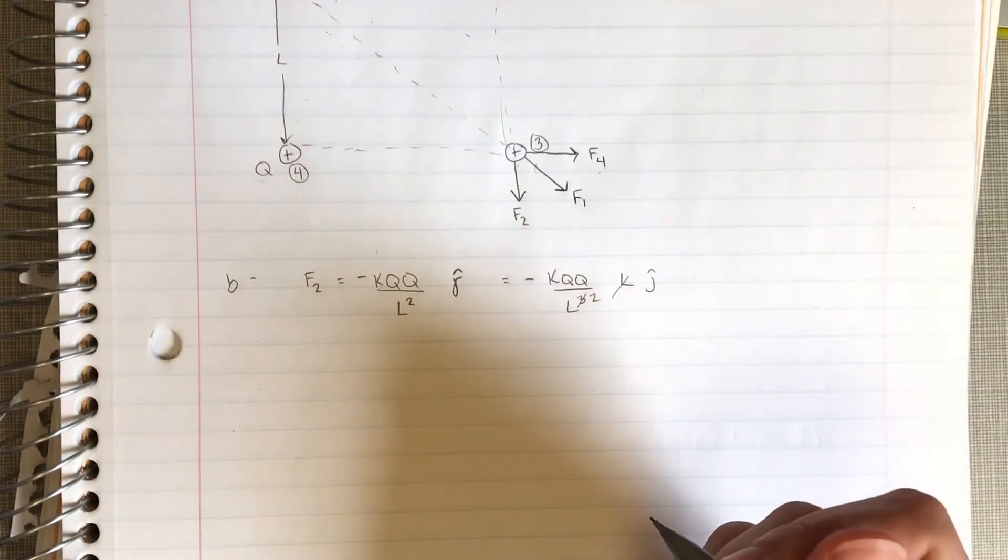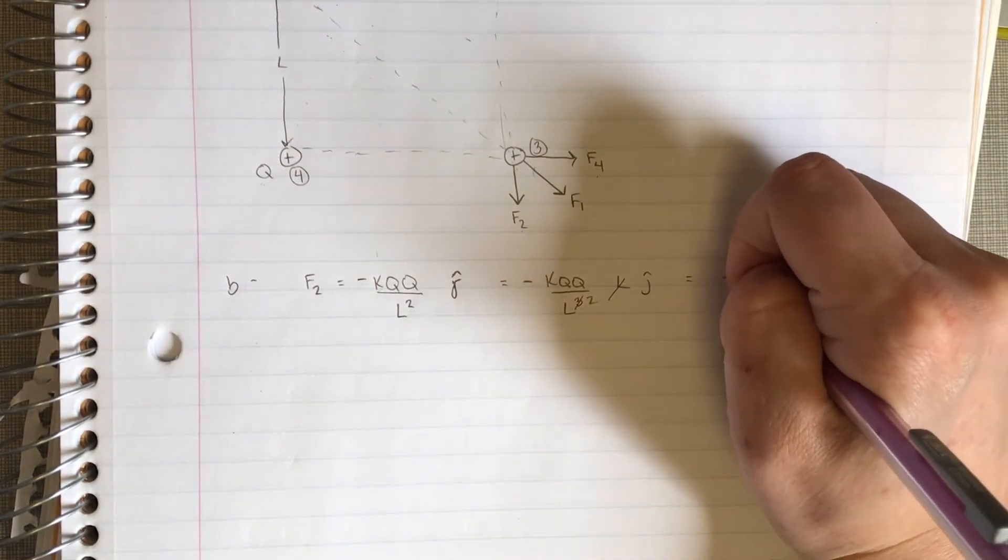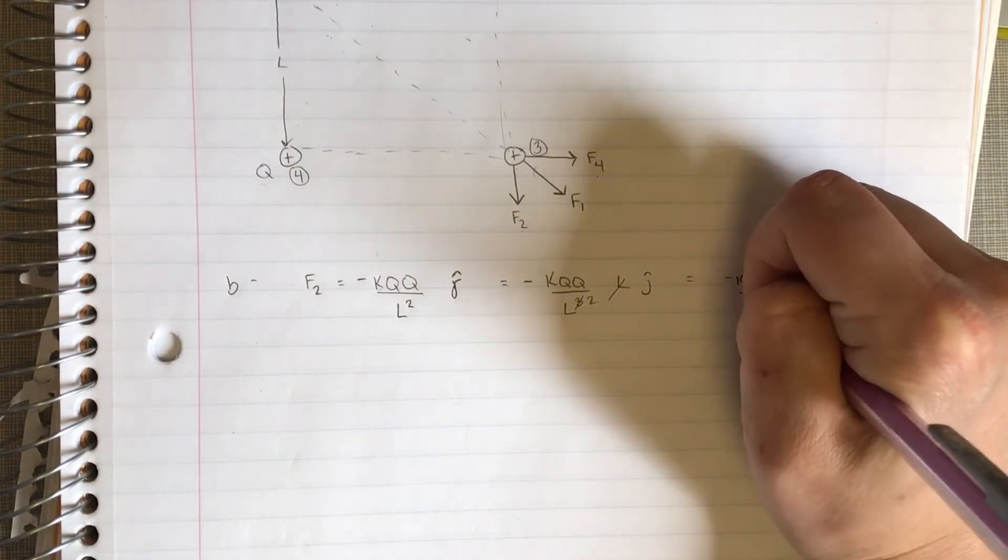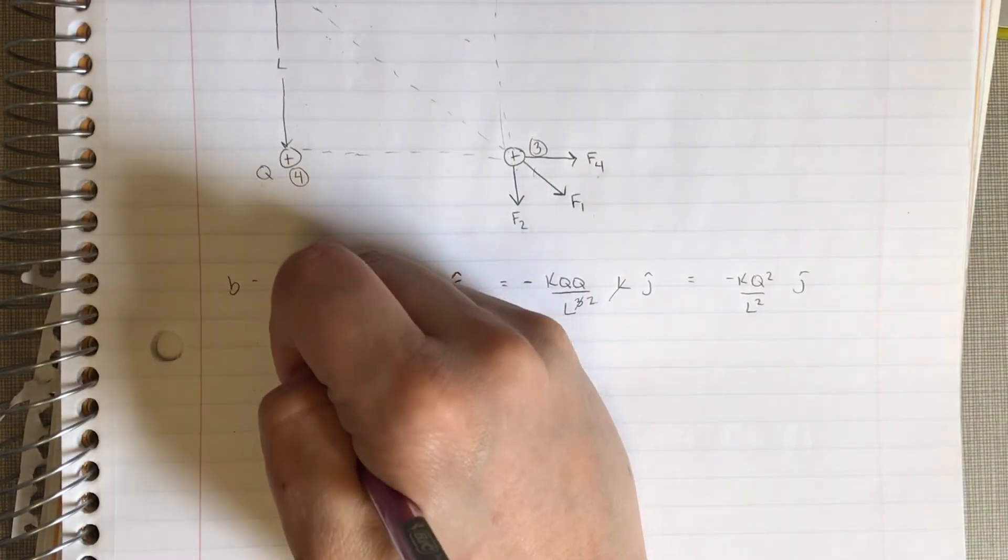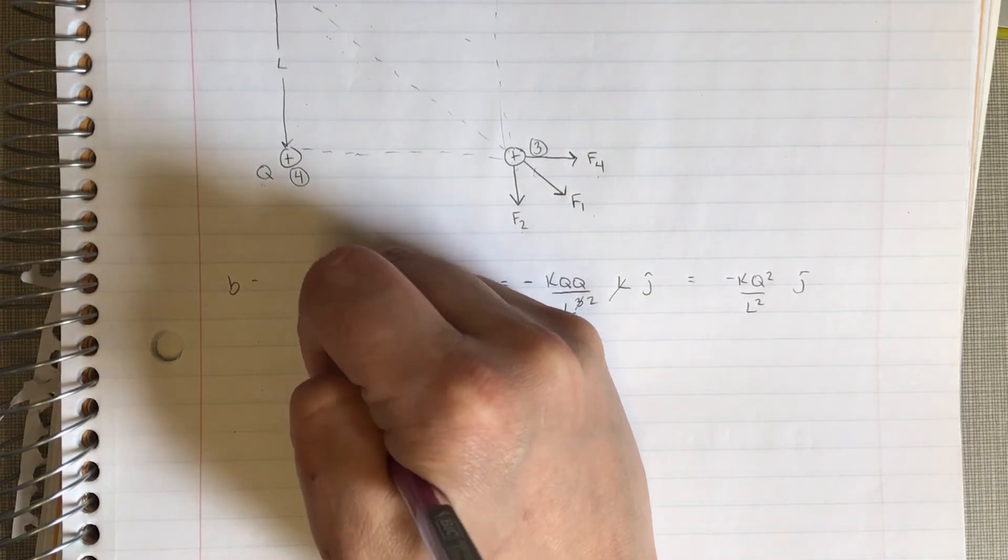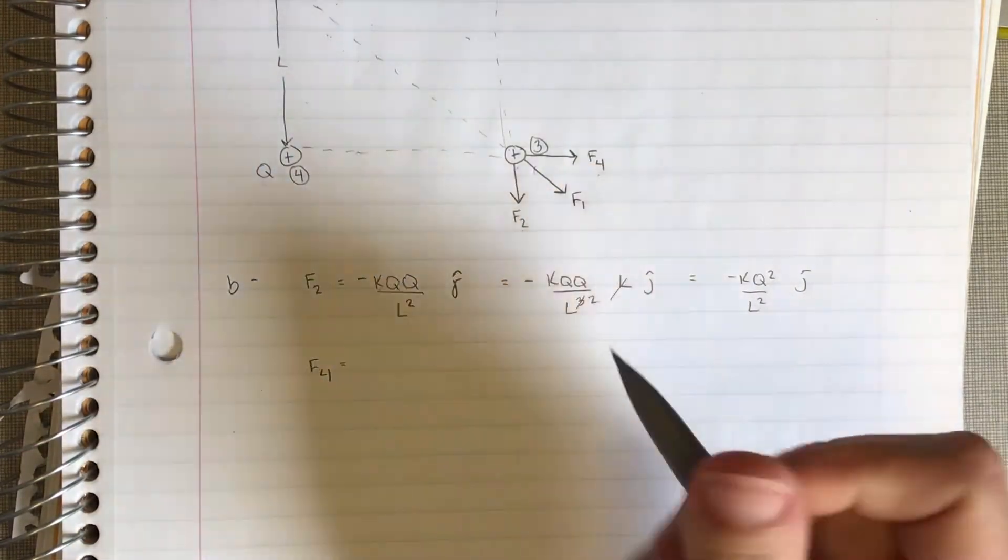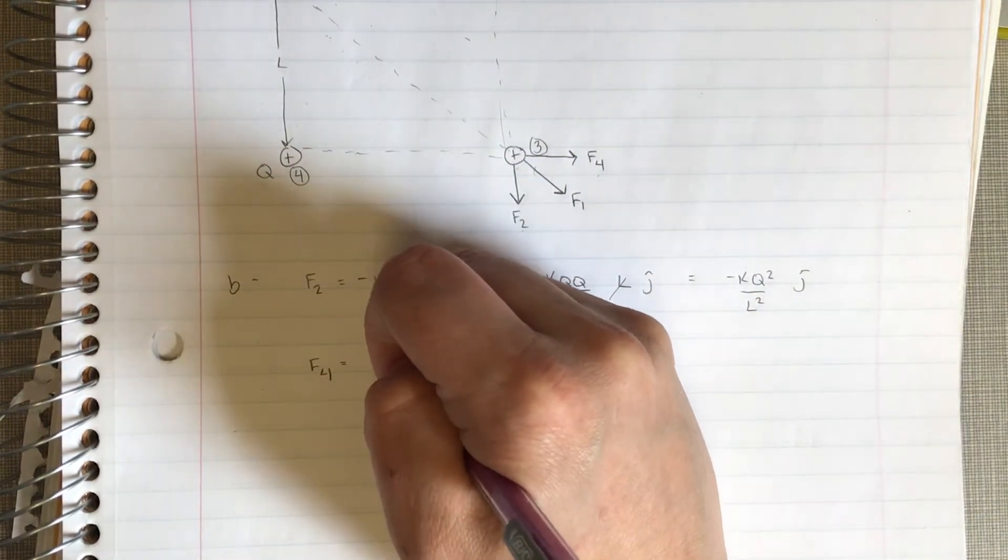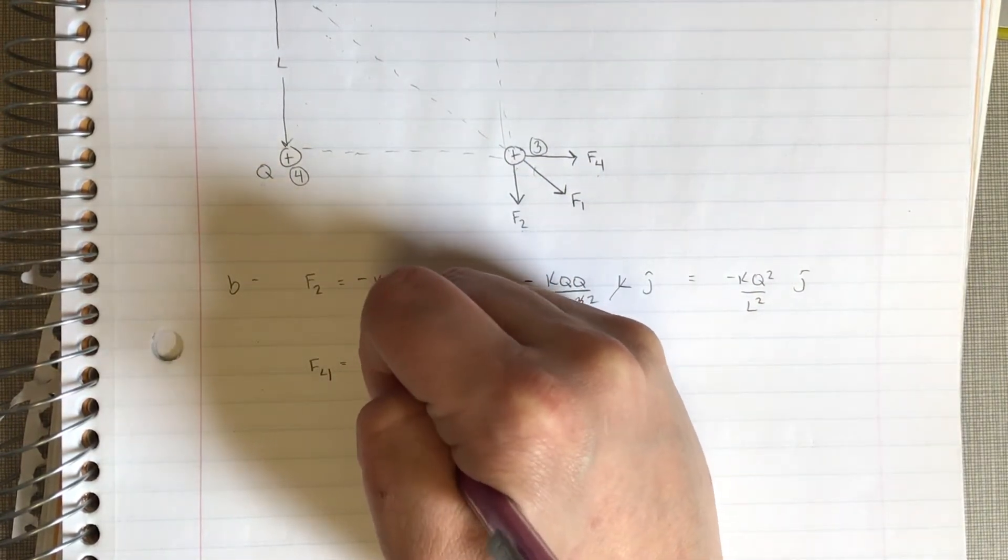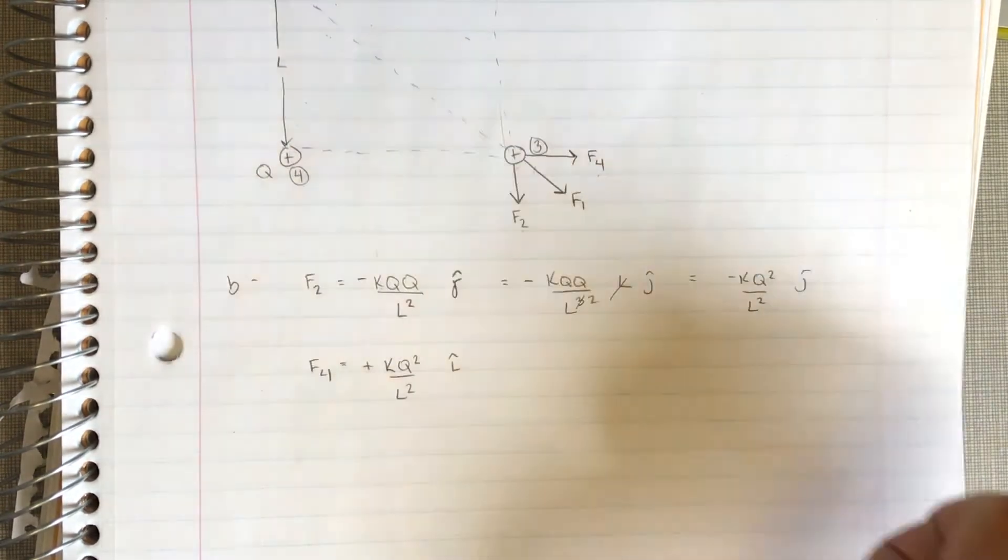So I'm going to write this nicer. This is going to be minus k q squared over L squared j hat. So f4, that's this guy, it's going to be exactly the same but he's just going to be in the positive i hat direction. So he's going to be k q squared over L squared in the positive i hat direction.